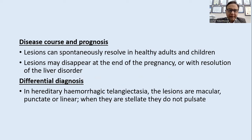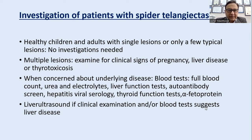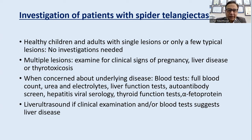Lesions can resolve spontaneously, usually disappearing at the end of pregnancy or when liver disease is resolved. Differential diagnosis includes hereditary hemorrhagic telangiectasias, but there the lesions are macular or linear and neither spider-like nor pulsatile. For multiple lesions, investigate for pregnancy, liver disease, or thyrotoxicosis with full blood count, liver function tests, autoantibody screening, hepatitis serology, thyroid function test, and alpha-fetoprotein. Liver ultrasound if liver tests are abnormal.